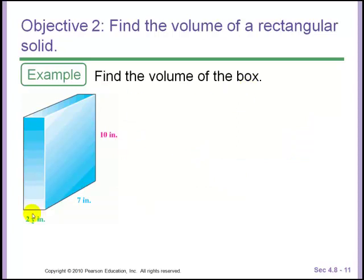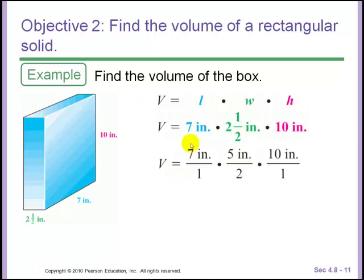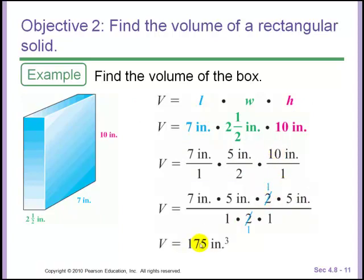Now we'll find the volume of this box. It's 2 1⁄2 inches wide, 7 inches long, and 10 inches high. Volume is length times width times height. So we have 7 inches times 2 1⁄2 inches times 10. Because this is a mixed number, we're going to convert them all to fractions. 7 over 1, 5 over 2, and 10 over 1. Break the 10 down as 2 times 5, and those 2s cancel. And we're left with 175 inches cubed. That is the volume of this box.